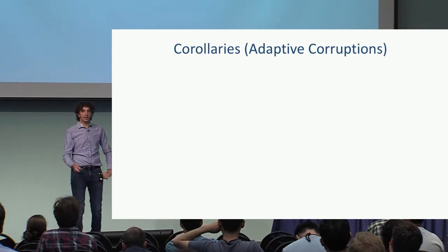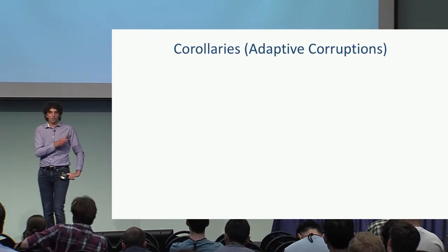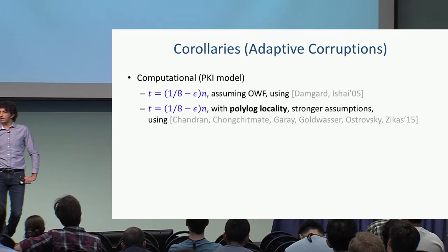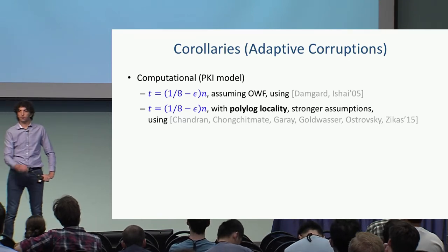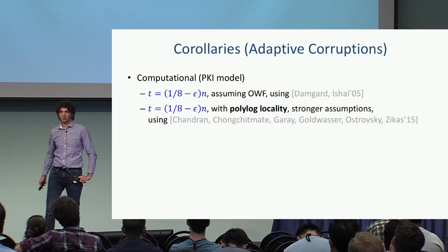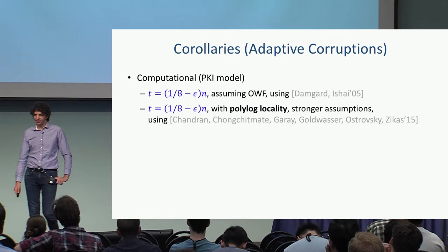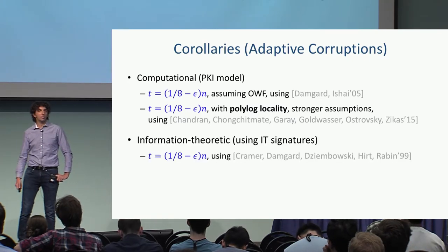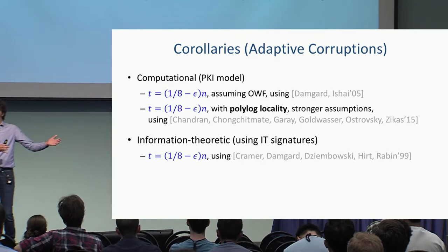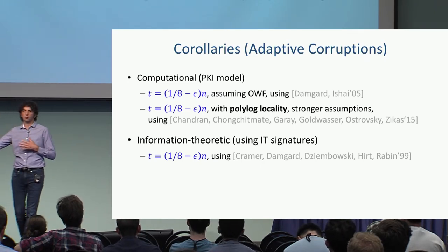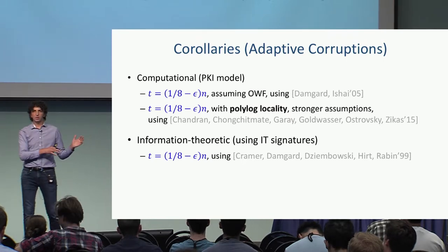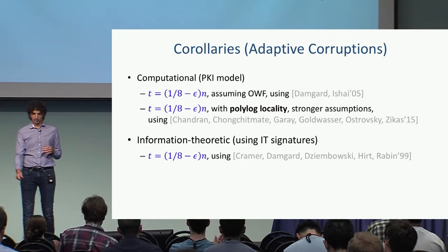We can now get corollaries that also hold for adaptive corruptions. In the computational setting, we can get polylogarithmic locality with adaptive corruptions and protocols which are not an expander. We can also use adaptively-secure information-theoretic protocols to get information-theoretic protocols with adaptive corruptions that are not an expander.